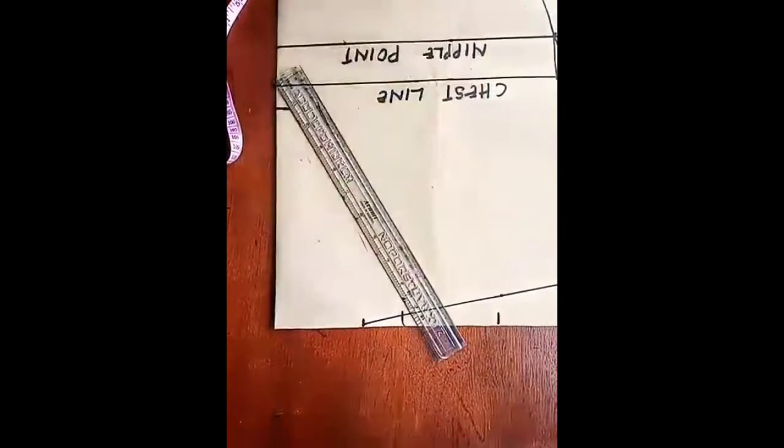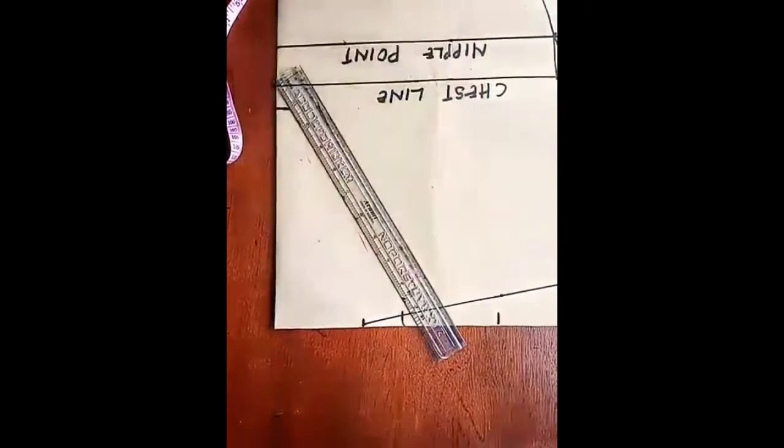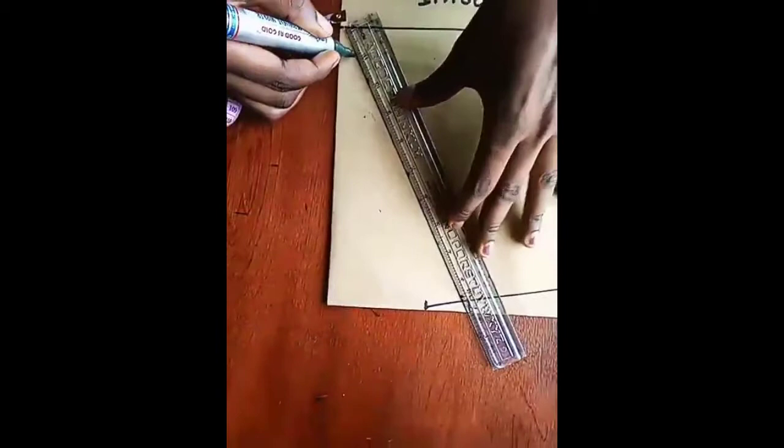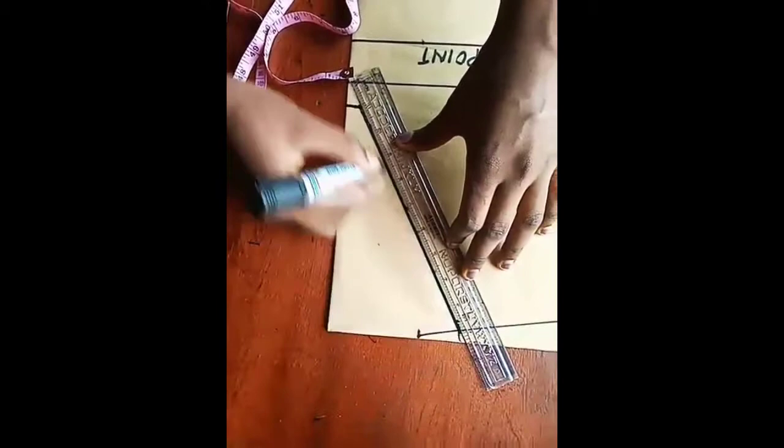So I'll mark out half inch or three-quarter inch, then do my joining like this. And I'll cut it out and show you.